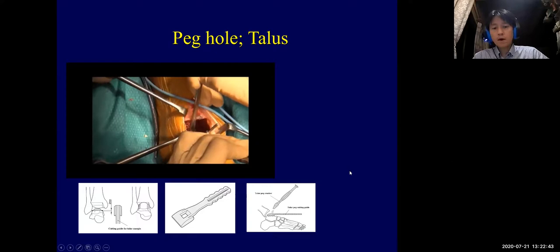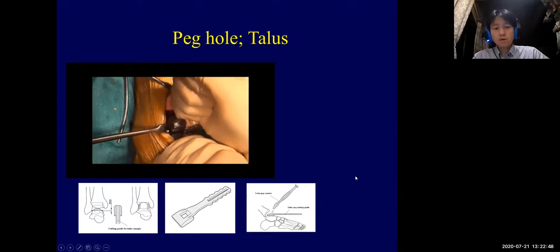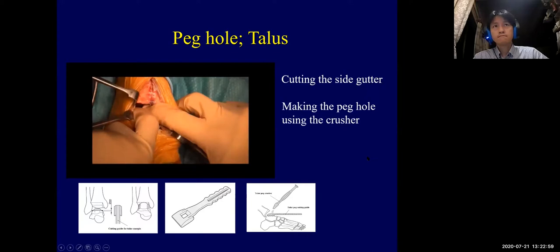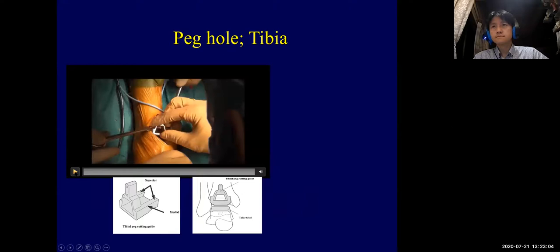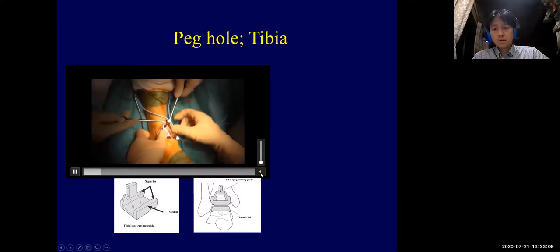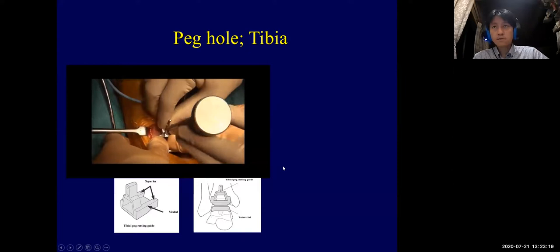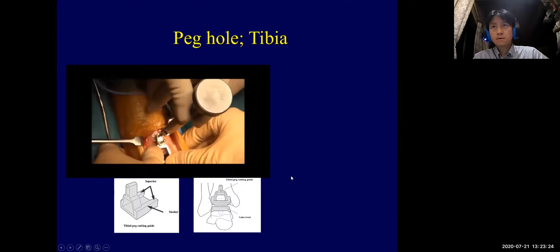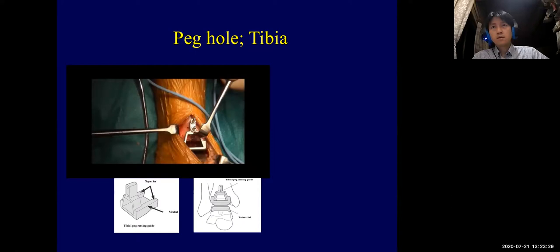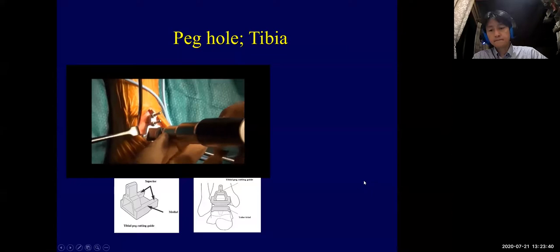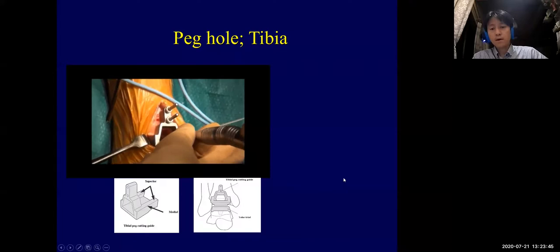The posterior edge of the cutting site is carefully removed using a bone saw and bone file. After setting the talar margin cutting guide, bilateral cortices are resected. The talar peg cutting guide is then set, and after marking with a bone chisel, the peg crusher is impacted to make a peg hole. The next step is making the peg hole of the tibia using a micro bone saw inserted along the guide, and the deep area is also treated with a high-speed burr.